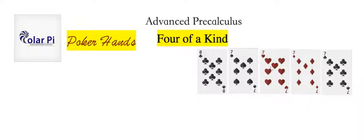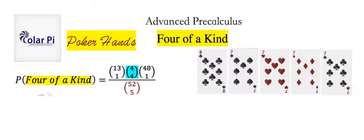All right. Here's one possibility of four of a kind. And here is how you calculate the probability.